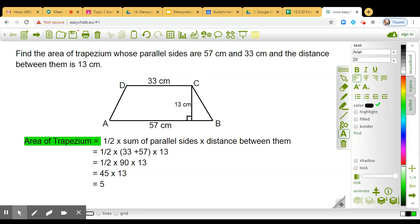What is 45 into 13? Tell me the answer first. 585, 585, brilliant! So 585 square centimeter. This is how you can solve this question.